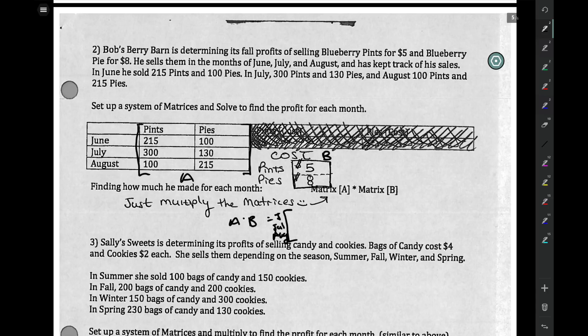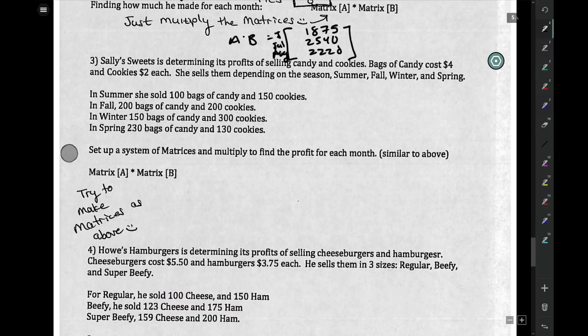Each of those is $1,875, $2,540, and $2,220. Now, scaffolding, I want you to make the matrices. So you set up the system of matrices. Just try. Again, your two things are candy and cookies. So those are your columns, candy and cookies.